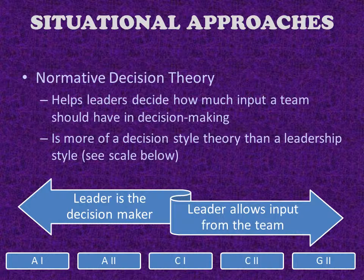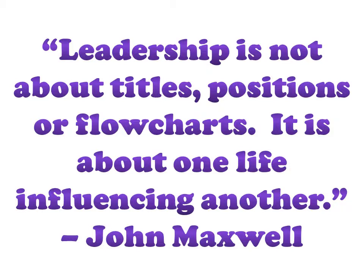Normative Decision Theory helps leaders decide how much input the team has in decision-making. There are five different levels between the leader making all the decisions and the opposite end of the spectrum, which allows team members to have more input in the decision-making.